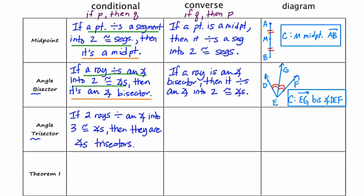A couple differences between angle bisector and angle trisector: an angle bisector is one ray, whereas an angle trisector is two rays. An angle bisector cuts an angle in half, whereas an angle trisector cuts it into three congruent angles. I'll identify the hypothesis in green and the conclusion in orange, then formulate the converse: if two rays are angle trisectors, then they divide the angle into three congruent angles.